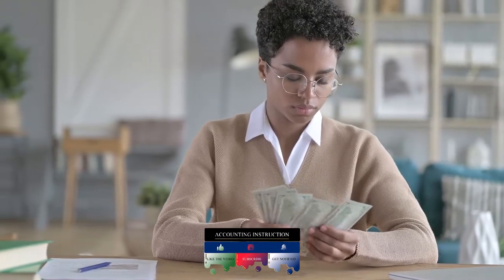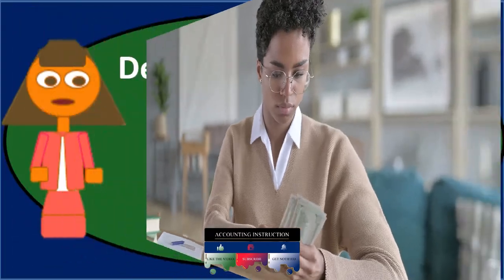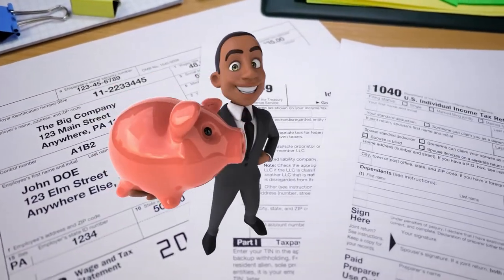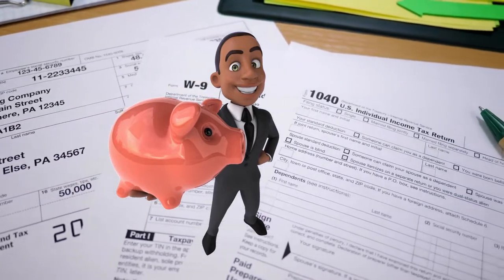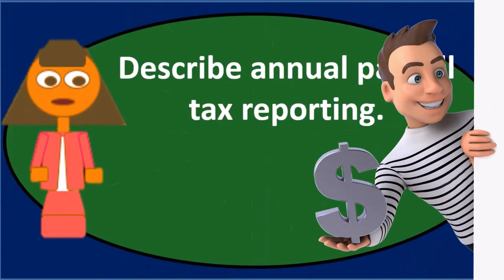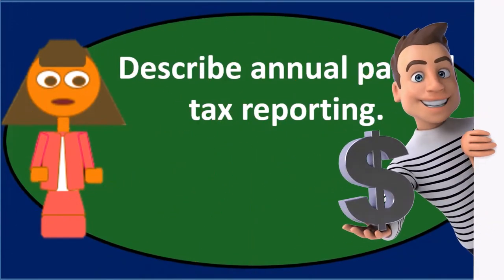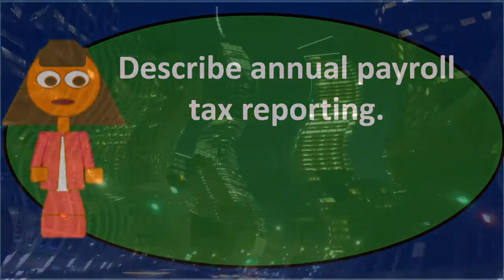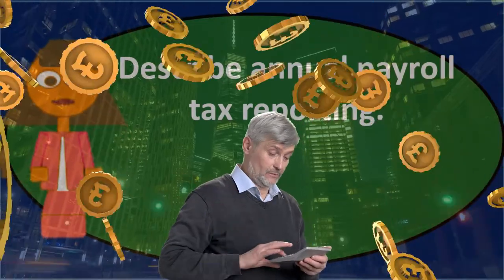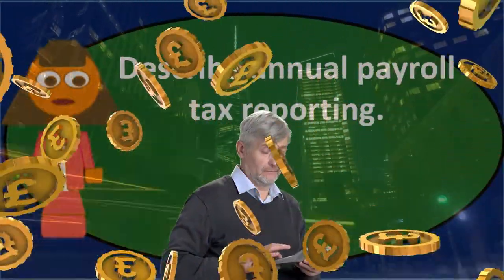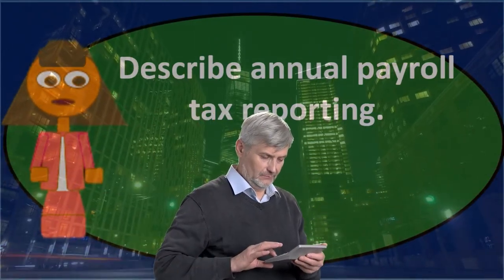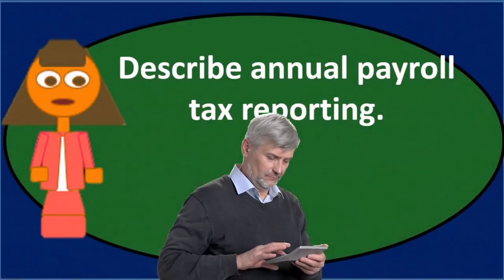FUTA taxable income will be much lower than any other taxable income — much lower than gross income, social security income, or Medicare income. We then multiply that by the rate, which is 0.006 or 0.6% currently. That's the practical rate right now, and it's based on whether or not state payments have been made.